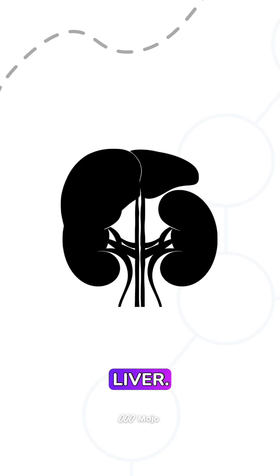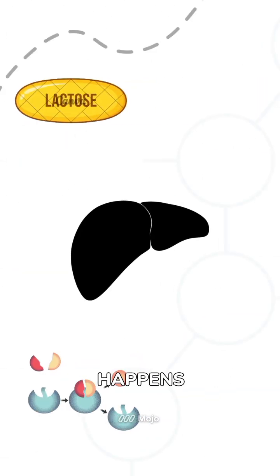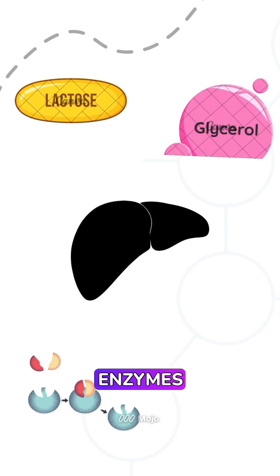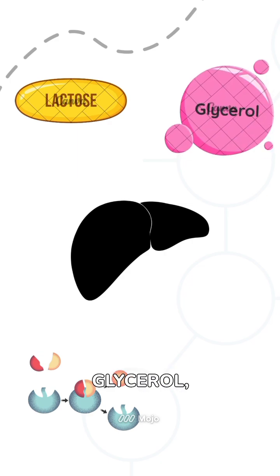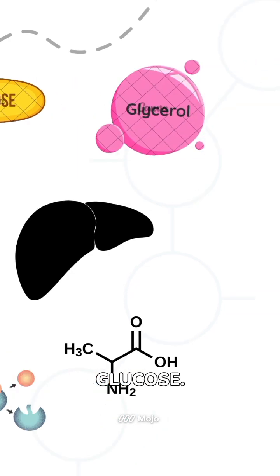Where it happens. Liver. The majority of gluconeogenesis happens here. The liver has all the enzymes needed to convert lactate, glycerol, and amino acids into glucose.